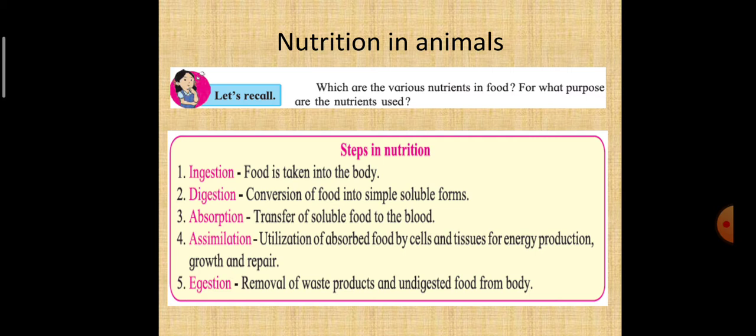Nutrients necessary for various activity of the body are obtained from food. They are supplied to various parts of the body through blood. But does blood get the nutrients directly from food? No. The food that we consume does not mix with the blood as it is. It needs to be converted into soluble forms that can easily mix in blood.